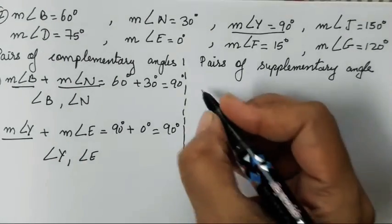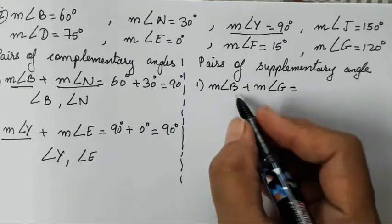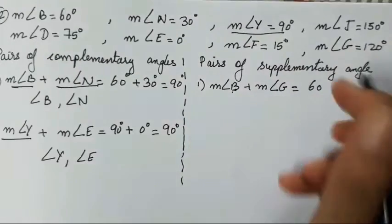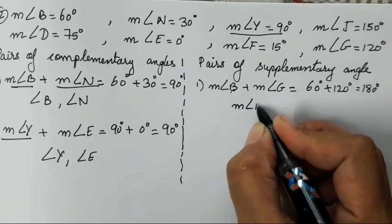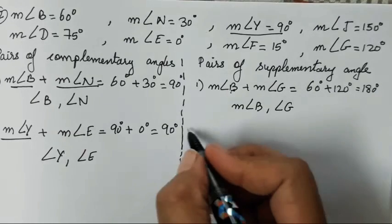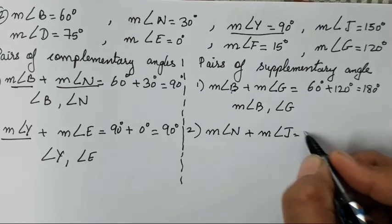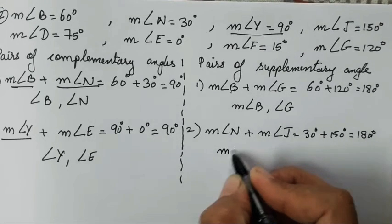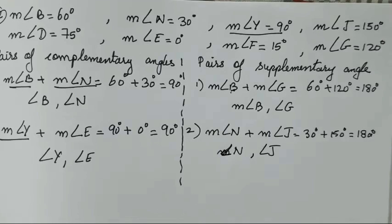Now we will find supplementary angles. Measure of angle B plus measure of angle G: 60 plus 120 equals 180 degrees — so angle B and angle G are supplementary angles. Measure of angle N plus measure of angle J: 30 plus 150 equals 180 degrees — so angle N and angle J are supplementary angles. This kind of sum is easy to solve.